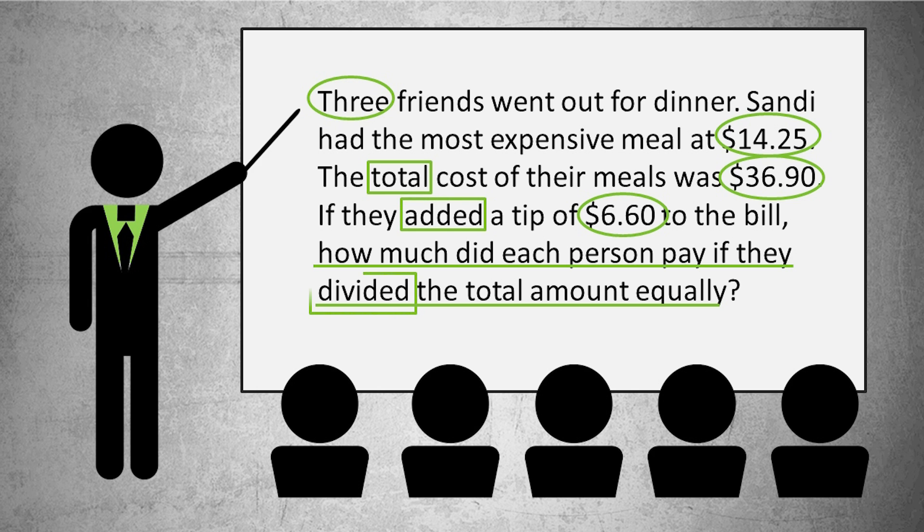Let's see what steps I need to take and if there is any unnecessary information. Because they are dividing the bill equally, I do not need to know that Sandy had the most expensive meal, so I can eliminate that amount.